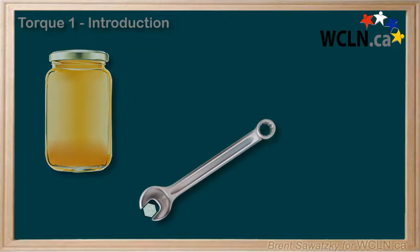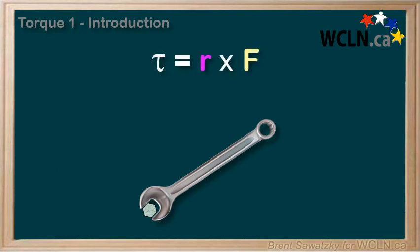Let's first establish our torque equation. Tau, which is a fancy T in our symbol for torque, is equal to R times F, or R cross F. Where R is the radius of rotation, or distance from the pivot point, that is the bolt in this case, to the force. While F is the force causing this torque.